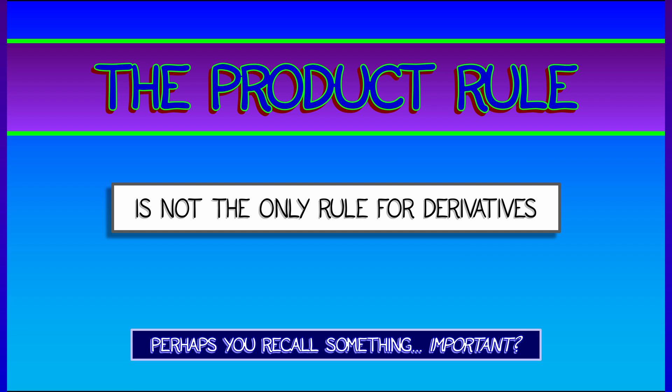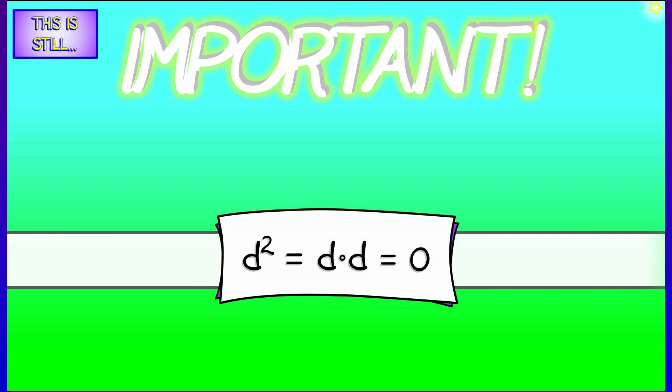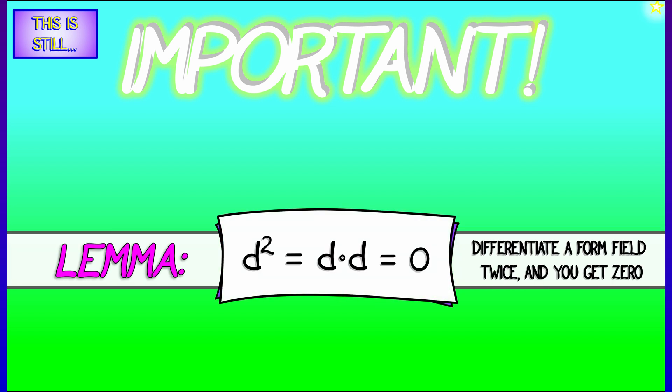Oh wait, I seem to recall something really important, something that is still important, something that we learned back in chapter 8, namely that d squared is zero.